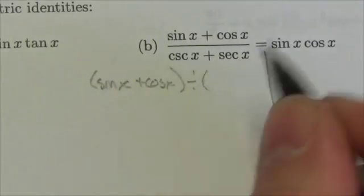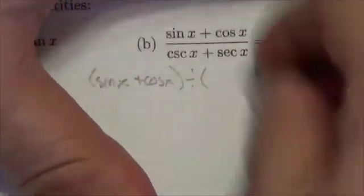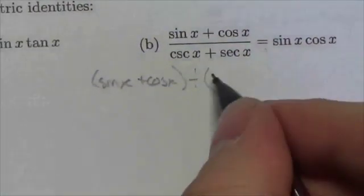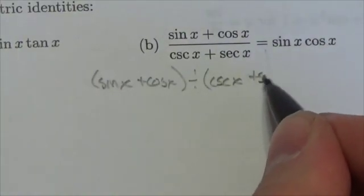Divided by, and I'm going to have to give myself a little bit more room here. If you think about it as a horizontal division statement. So, cosecant of x plus the secant of x.